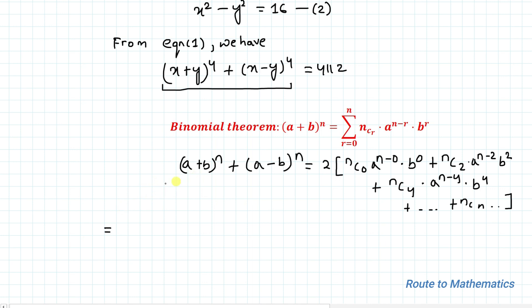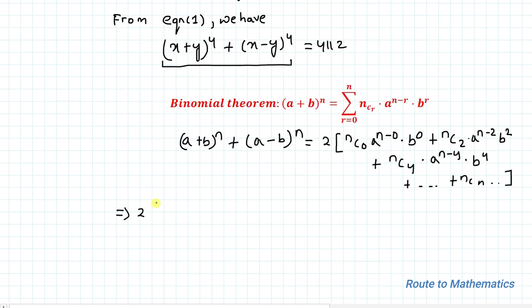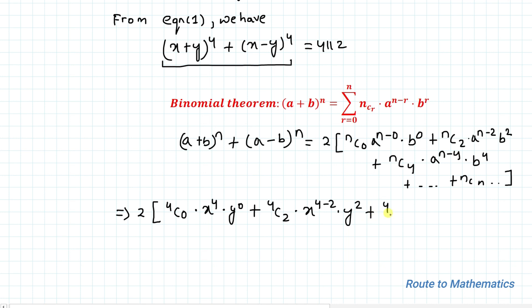By applying this expansion, we have 2 multiplied with [4C0·x⁴·y⁰ + 4C2·x²·y² + 4C4·y⁴] equals 4112.